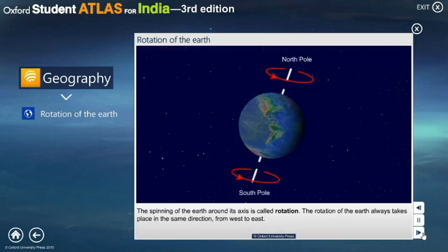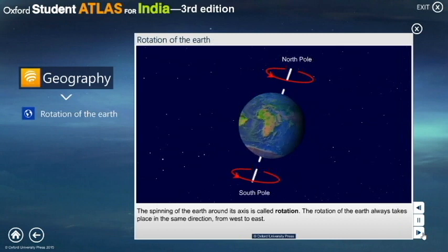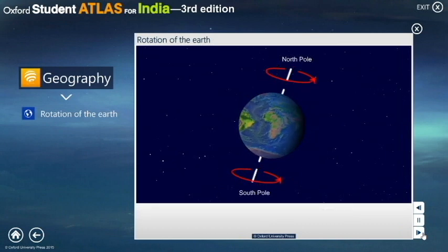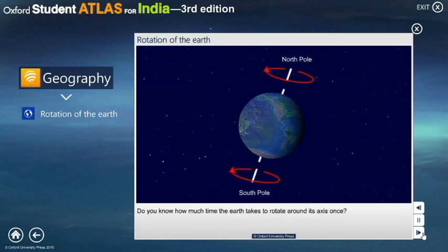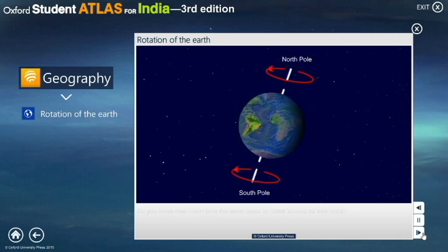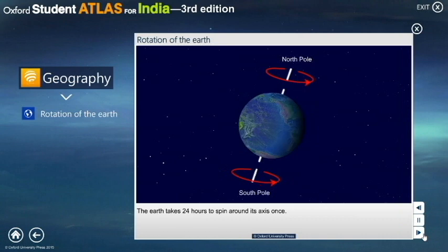The spinning of the Earth around its axis is called rotation. The rotation of the Earth always takes place in the same direction, from west to east. Do you know how much time the Earth takes to rotate on its axis once? The Earth takes 24 hours to spin around its axis once.